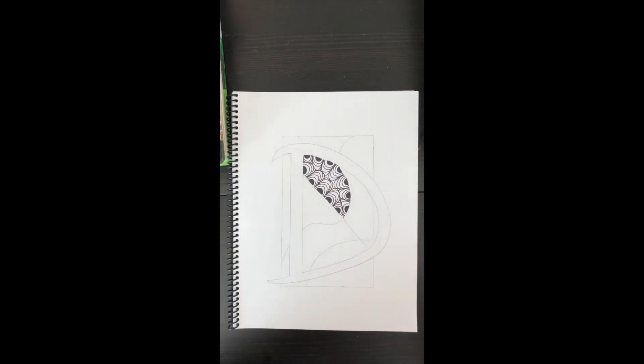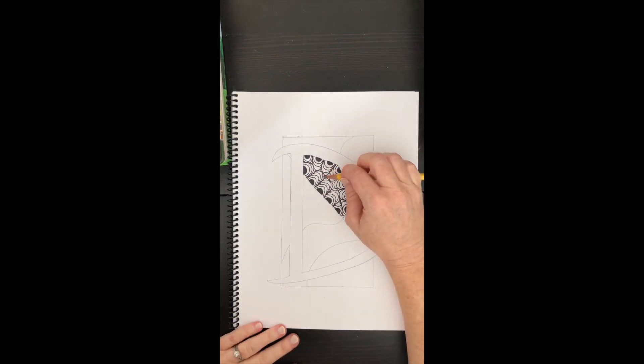And then the coolest thing about zentangles is adding a little bit of pencil to add some depth to your design. Notice I'm using the side of my pencil, and I'm just going to add some shading on the sides here. That looks way cool.